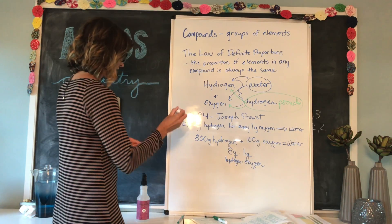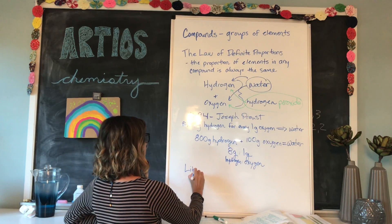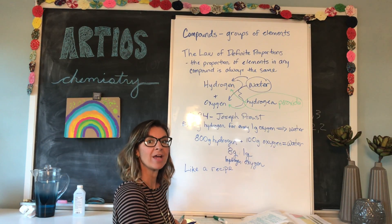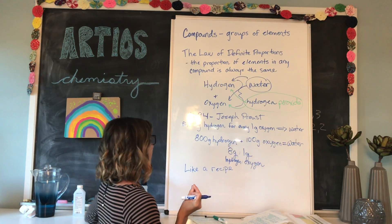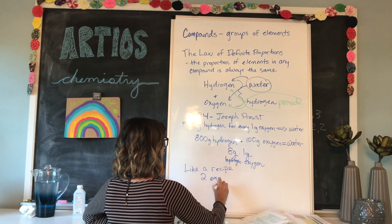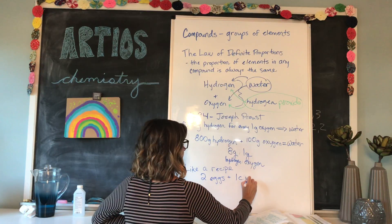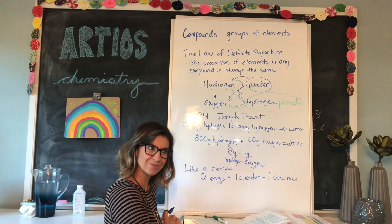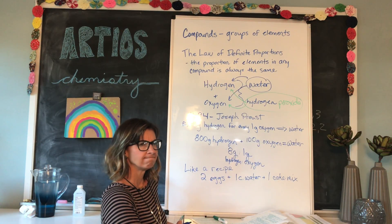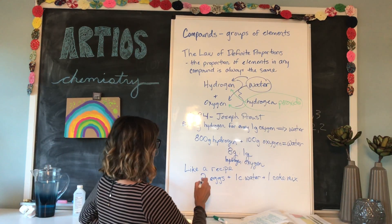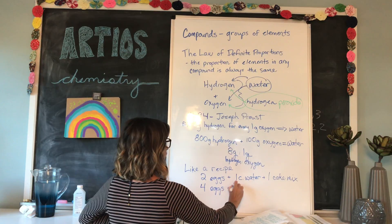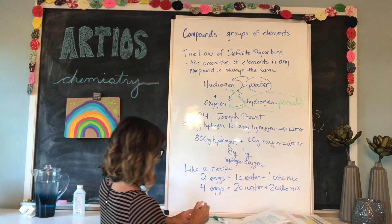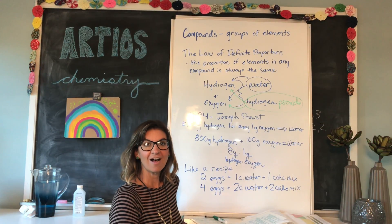You can think of it like a recipe. Say you're making a cake for your chemistry teacher because she loves chocolate cake and white buttercream frosting. You know that you need two eggs and one cup of water for every one cake mix. But you want to make two cakes, so you would need four eggs, two cups of water, and two cake mixes — and don't forget the two jars of buttercream frosting as well. So that is the law of definite proportions.